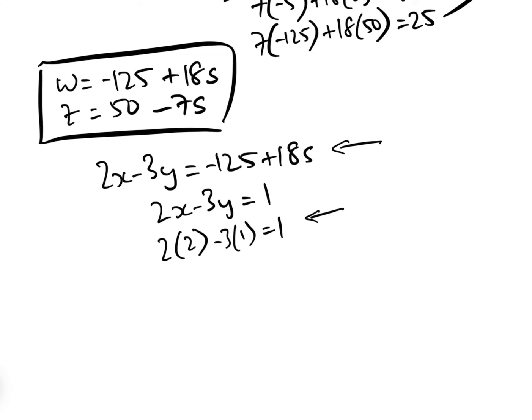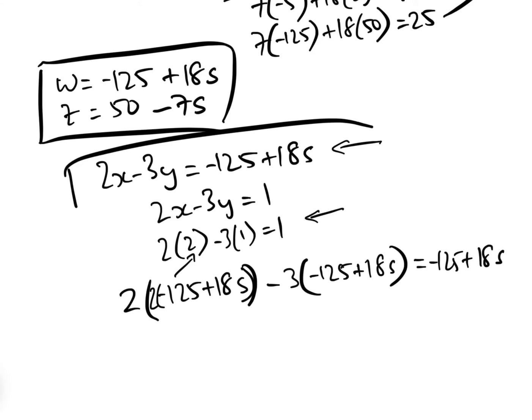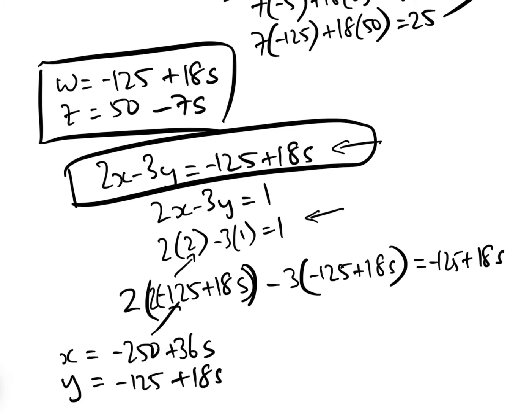If we compare this equation and this equation, it would be 2 times 2 times (minus 125 plus 18S) minus 3 times (minus 125 plus 18S) equals minus 125 plus 18S. Therefore, we know that a specific solution is x equals minus 250 plus 36S, and y equals minus 125 plus 18S.